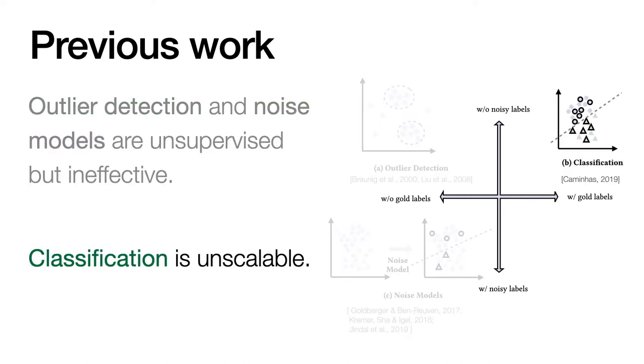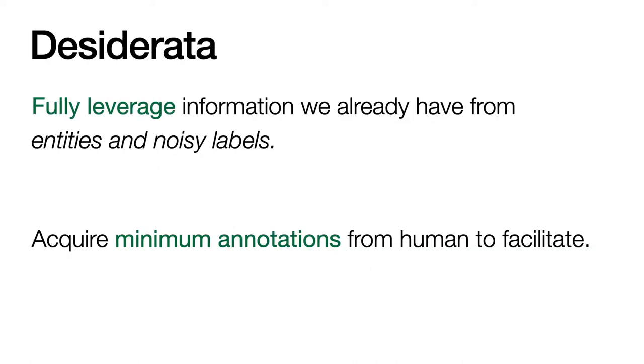And supervised classification, in this case, is also unscalable. So what we want here is something that can fully leverage all the information we already have in the dataset. And it should also require some supervision to overcome the effectiveness of unsupervised methods. But the amount of annotation should be minimum.